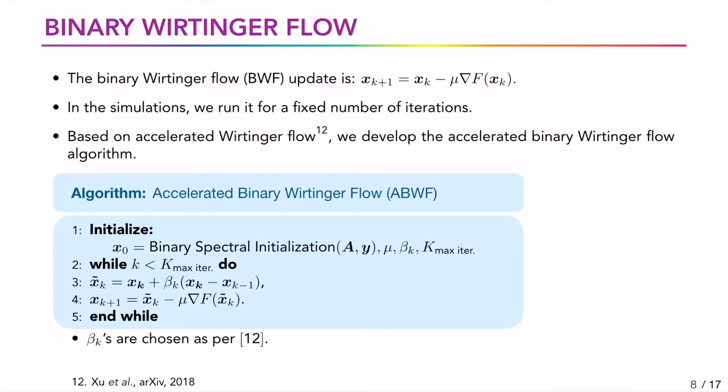Overall, the proposed Wirtinger flow algorithms are much simpler compared with the baseline approach of lifting as updates are in the signal domain and not in the lifted domain. Thus the per-iteration complexity of the binary Wirtinger flow is much lower than the baseline lifting based algorithm. This not only speeds up the algorithm but also makes it much suitable for high dimensional settings.